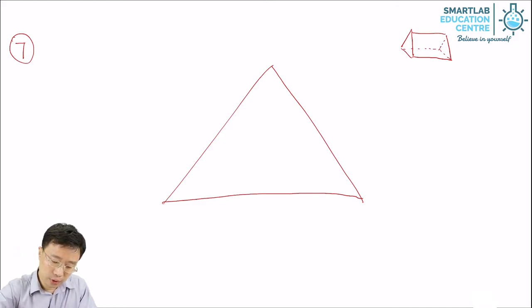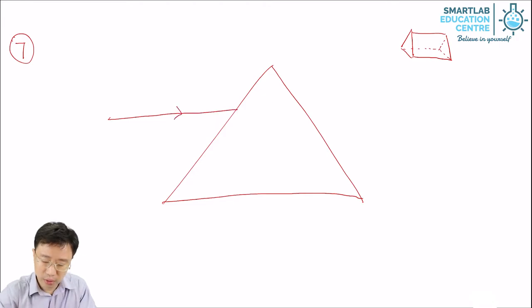So when light falls on this part, how will it travel the rest of the way? Like in the case of the rectangle block, the first thing you do is that you draw a normal to the surface where the light hits.